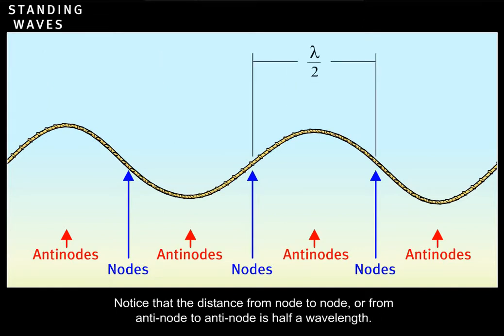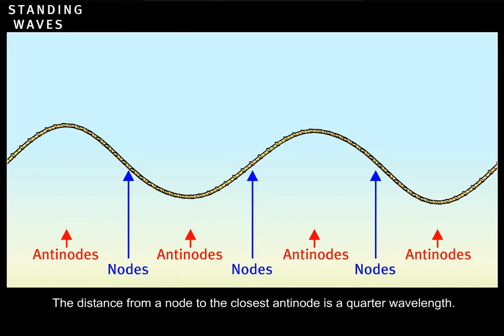Notice that the distance from node to node or from antinode to antinode is half a wavelength. The distance from a node to the closest antinode is a quarter wavelength.